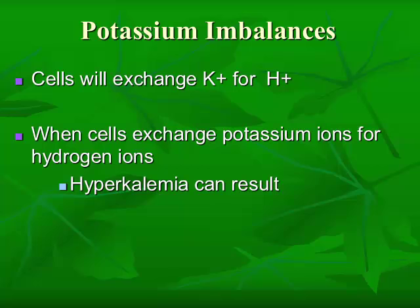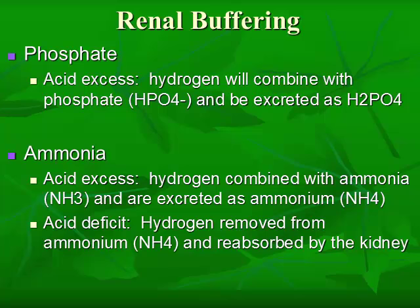When we look at potassium imbalances, cells will exchange potassium for hydrogen in order to help maintain extracellular fluid homeostasis. When the cells exchange the potassium for hydrogen, hyperkalemia can result. As the imbalance is corrected and the hydrogen ions return to the bloodstream, you have to watch your patient because as the potassium returns into the cells, we can go from a state of hyperkalemia to a state of hypokalemia. With renal buffering, the kidneys will not only excrete electrolytes but will also bind them, making them unavailable for anything else.